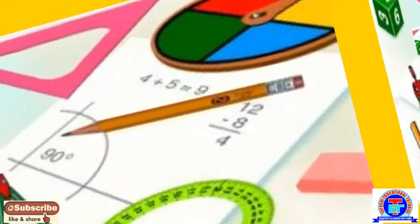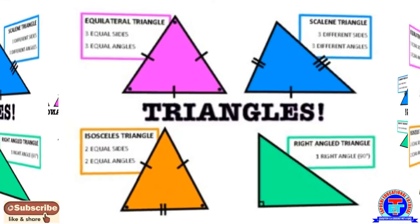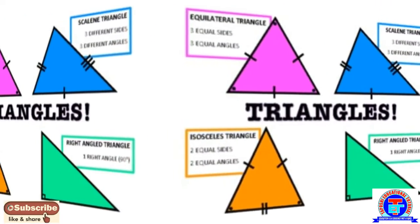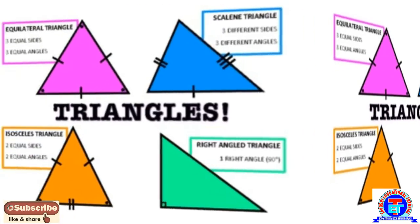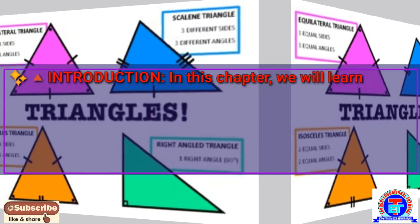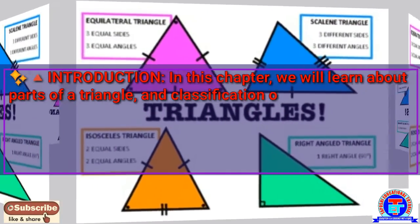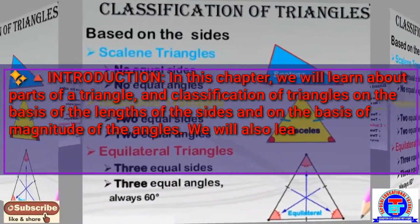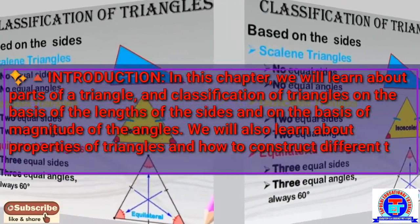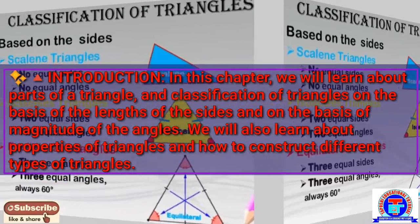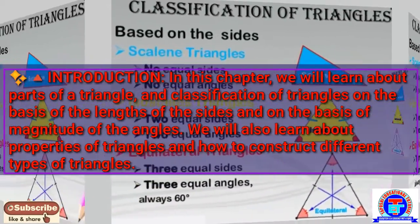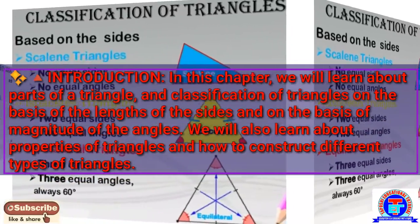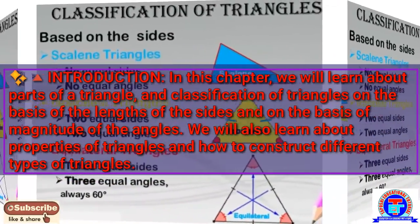Good morning, dear children. Let us begin our journey in Geometry Part 2, understanding how easy and interesting it can become. In this chapter we will learn about parts of a triangle and classification of triangles on the basis of the length of the sides and on the basis of the magnitude of the angles. We will also learn about properties of triangles and how to construct different types of triangles.